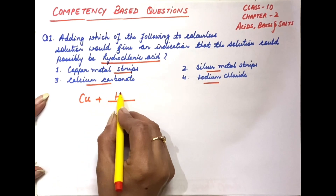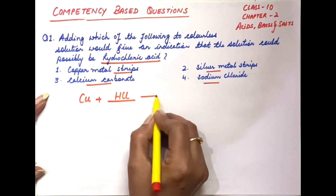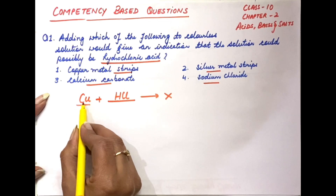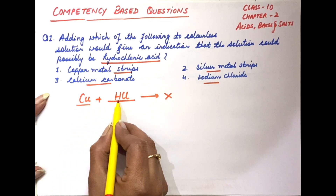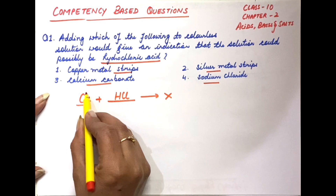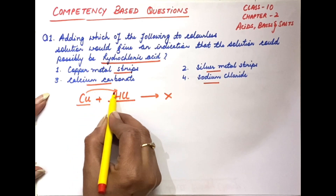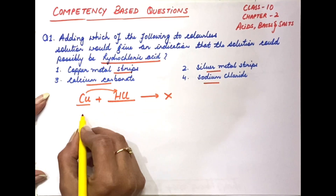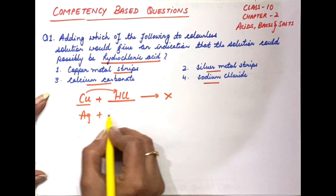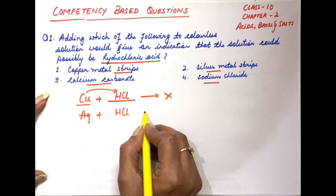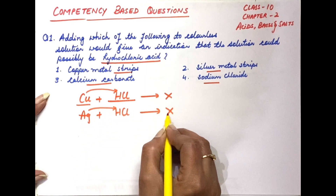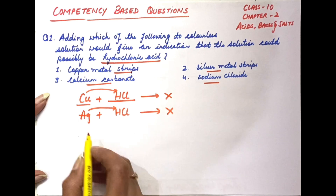Copper की reaction hydrochloric acid के साथ नहीं होती है, because in the reactivity series, copper is below hydrogen. So copper cannot displace the hydrogen from the HCl colorless solution. Silver also comes below hydrogen in the reactivity series, so it cannot displace hydrogen — no reaction can take place.